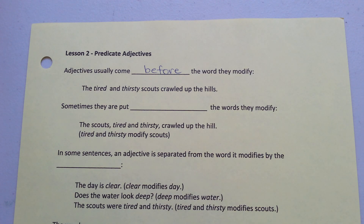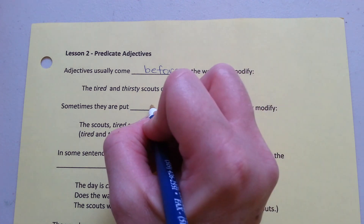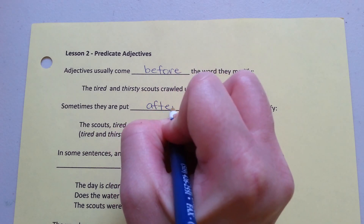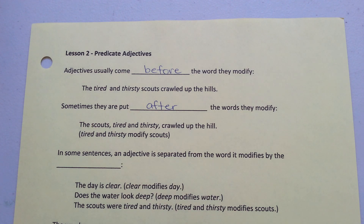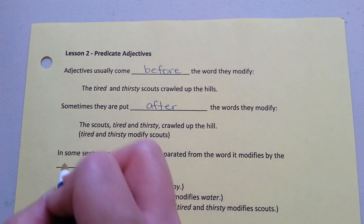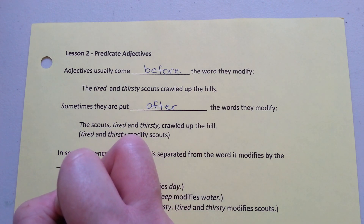Sometimes they are put after the words they modify: 'The scouts, tired and thirsty, crawled up the hill.' Tired and thirsty modify scouts. In some sentences, an adjective is separated from the word it modifies by the verb.